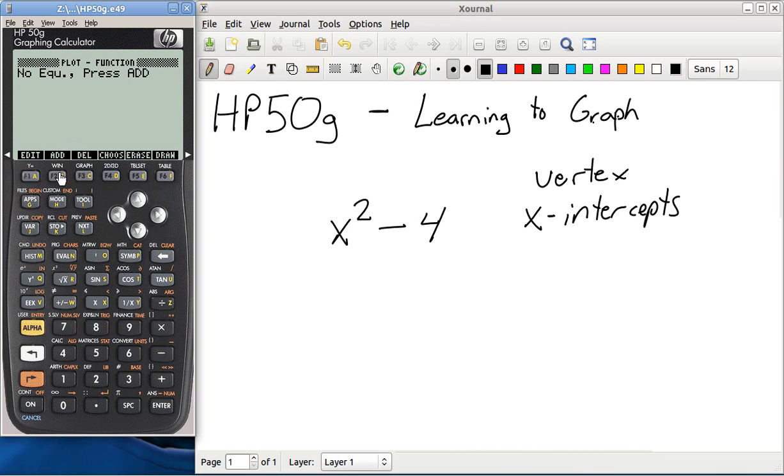Right here, we're going to add an equation, F2. We're going to put in x squared minus 4: x, y of x, squared. Highlight that term, and then we're going to put in the minus 4. That's it. Hit enter. Now we have that equation in our plot function window.